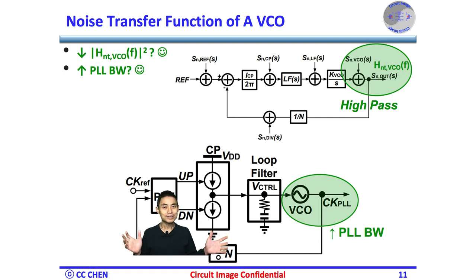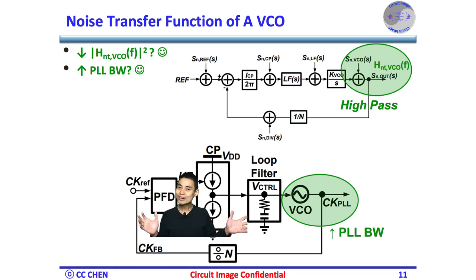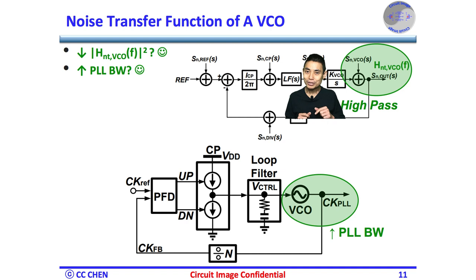Second, what's the frequency response of a VCO? If the PLL would follow the input reference clock well at low frequency, the PLL may ignore any low frequency input of the VCO. On the other hand, the PLL may ignore the reference at very high frequency, and the VCO output will feed through to the PLL output directly without any feedback correction.